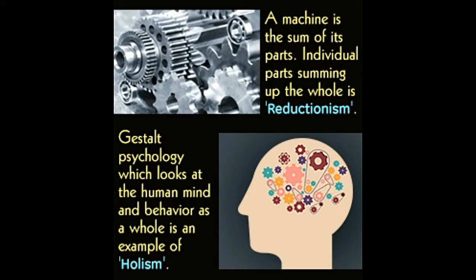The origin of reductionism dates back to the 1600s, when Descartes and Newton used Aristotle's laws of thought to explain their theories. In contrast, holism as a term was first used by South African statesman Jan Smuts in 1926, in his book Holism and Evolution.